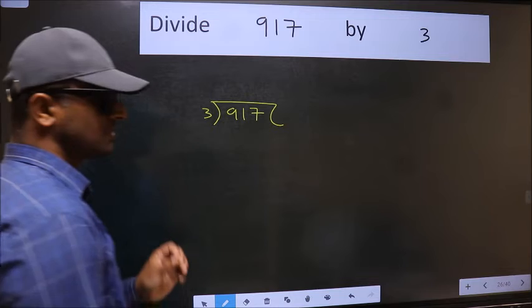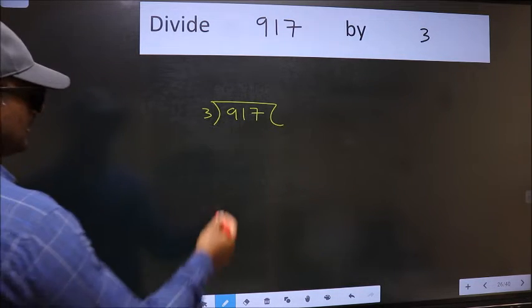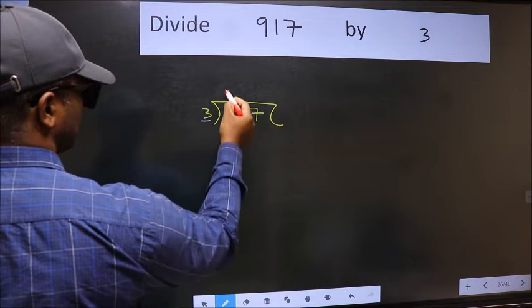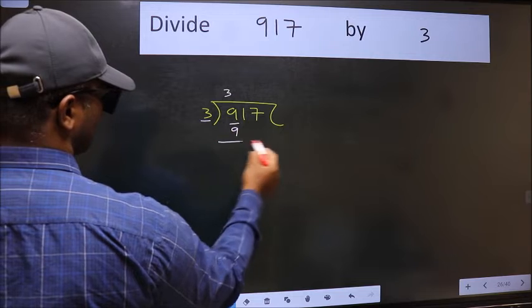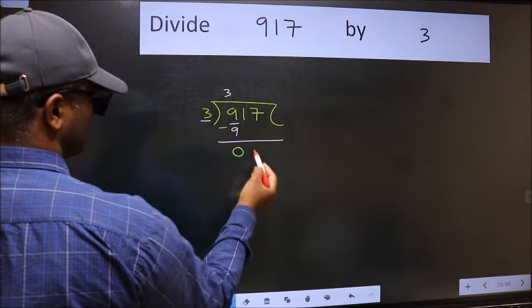This is your step 1. Next. Here we have 9 and here 3. When do we get 9 in the 3 table? 3 times 3 is 9. Now we should subtract. We get 0.